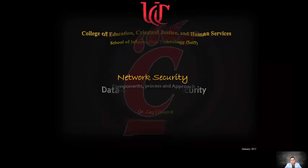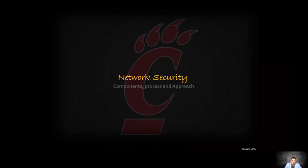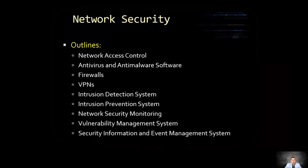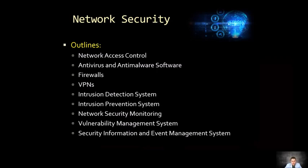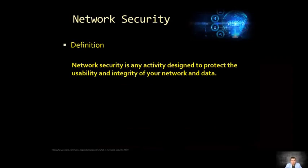We already suppose that we have some background about network security, but today we'll discuss components, processes, and approaches about network security with an eye on the data. Our outline today covers network access control, antivirus and anti-malware software, firewalls, VPNs, intrusion detection systems, intrusion prevention systems, network security monitoring, vulnerability management systems, and security information and event management systems.